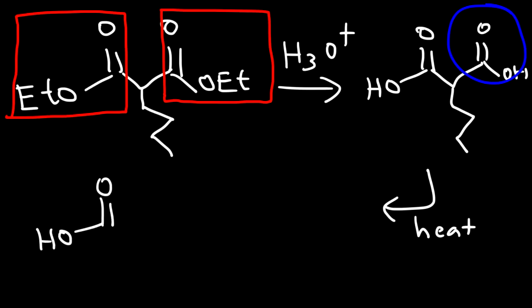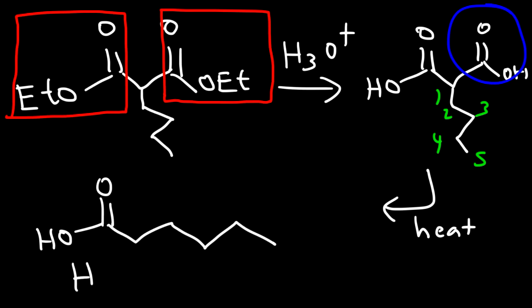So we're going to have five carbons attached to this carboxylic acid molecule. In this case, we have hexanoic acid as our product.